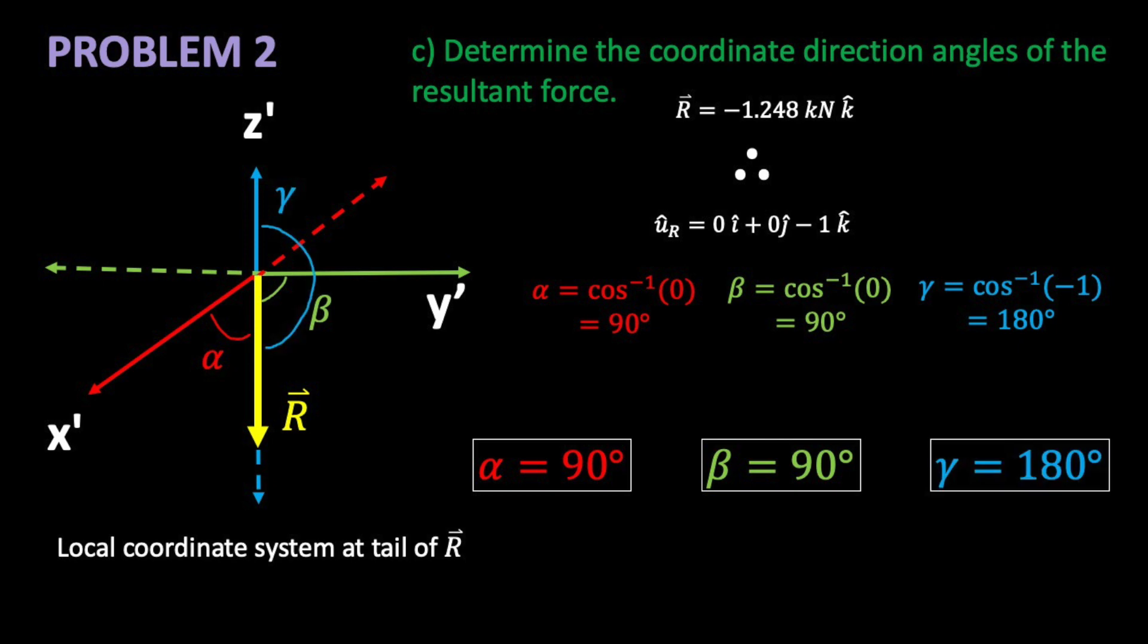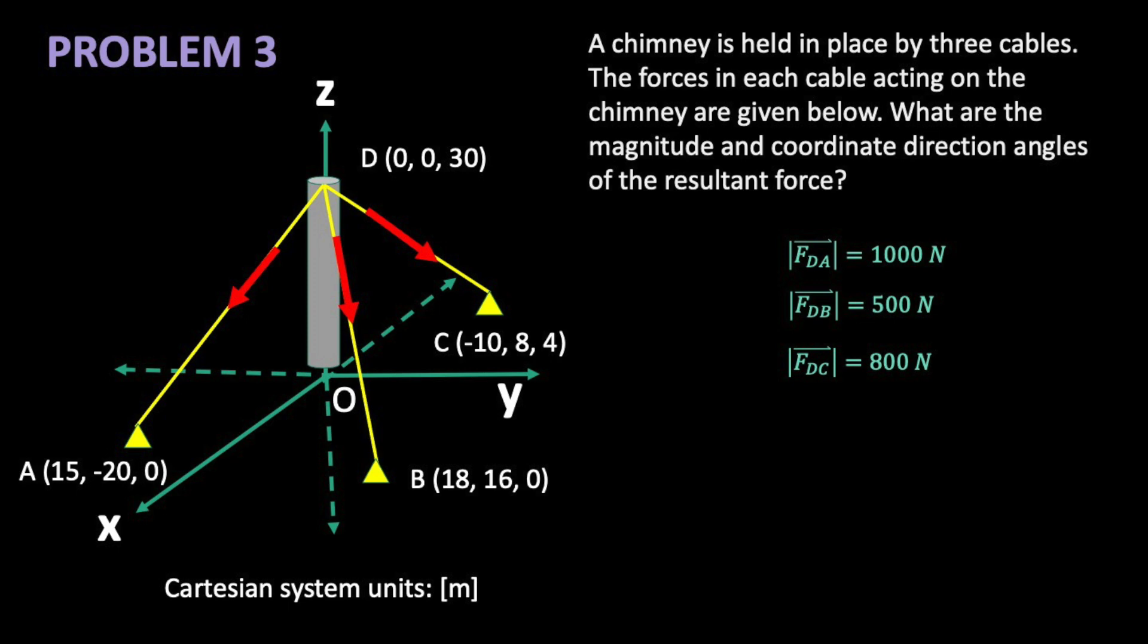Let's do one more, then you can be free. A chimney is held in place by three cables. The forces in each cable acting on the chimney are given below. What are the magnitude and coordinate direction angles of the resultant force? This problem is a lot like the last one, except that a lot of the simplification possible in problem 2 won't work here. Our supports aren't symmetric. The cables are all different lengths and they all have different forces. But our fundamental steps are the same.